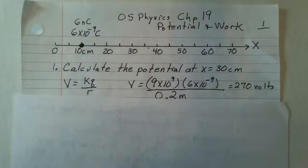We're on the number line here. We have a charge of 6 nanocoulombs at the 10 centimeter position. Again, nano is 10 to the minus 9. This material connects with chapter 19 if you're using the OpenStax College free online textbook.